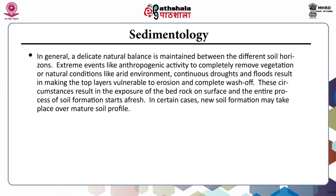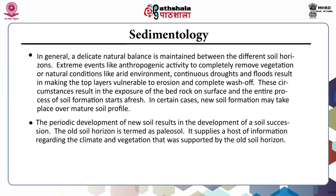In general, a delicate natural balance is maintained between the different soil horizons. Extreme events like anthropogenic activity to completely remove vegetation, or natural conditions like arid environment, continuous droughts and floods, result in making the top layers vulnerable to erosion and complete wash off. These circumstances result in the exposure of the bedrock on surface and the entire process of soil formation starts afresh. In certain cases, new soil formation may take place over a mature soil profile. The periodic development of new soil results in the development of a soil succession. The old soil horizon is termed as Paleo-Sol, and it supplies a host of information regarding the climate and vegetation that was supported by the old soil horizon.